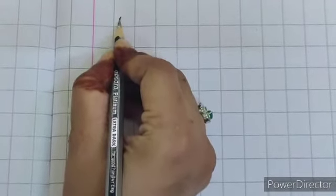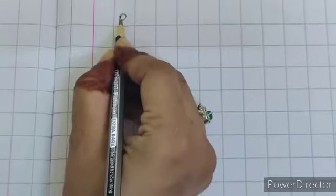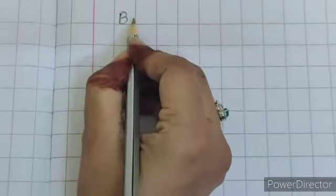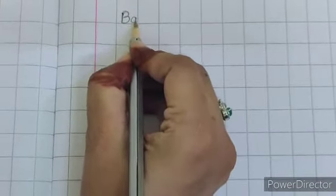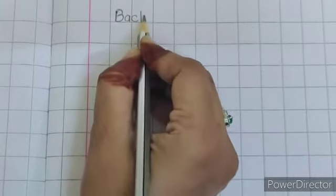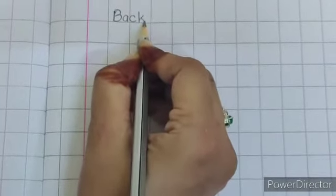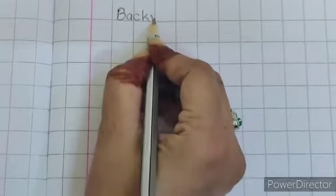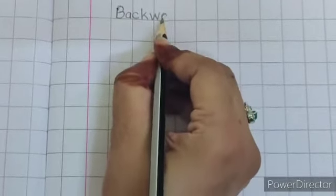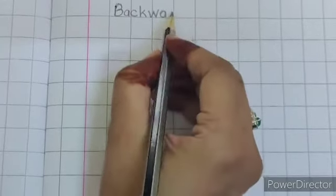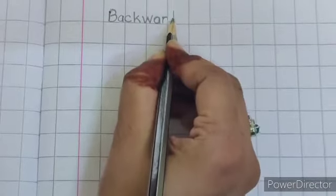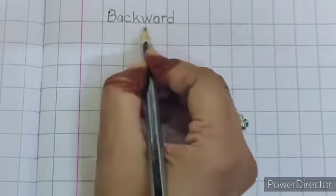capital B, A, C, K, W, A, R, D, backward